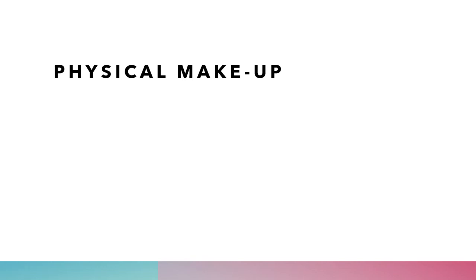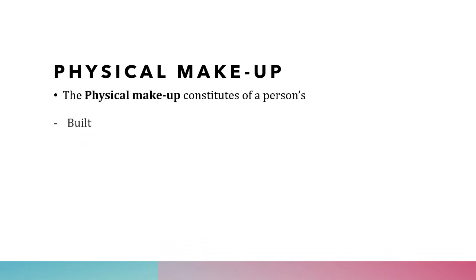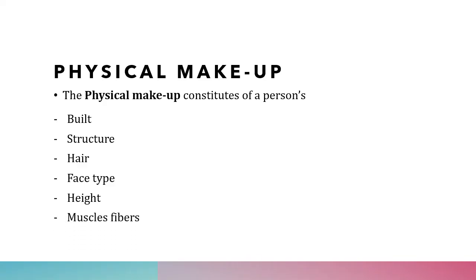Physical makeup consists of a person's built, structure, hair, face type, height, muscle fibers, and posture. A judicious and proper combination of all these factors is a complete representation of the person. All these factors differ from individual to individual because of differences in genetic code expressions. If all these factors are taken into consideration for a prescription, then what we are prescribing for is the genetic expression of the person as a whole.